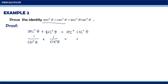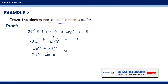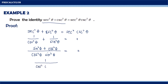Next, add the two fractions. Since we do not have a common denominator, we determine the common denominator by multiplying them: cosine squared theta times sine squared theta. So the numerator becomes: cosine squared theta times sine squared theta divided by cosine squared theta gives sine squared theta, and divided by sine squared theta gives cosine squared theta, giving us sine squared theta plus cosine squared theta all over cosine squared theta times sine squared theta. Using the Pythagorean identity, sine squared theta plus cosine squared theta equals 1, so we get 1 over cosine squared theta times sine squared theta.